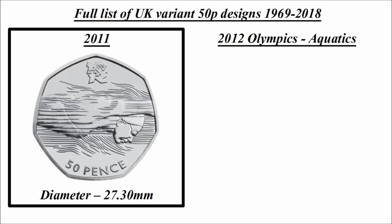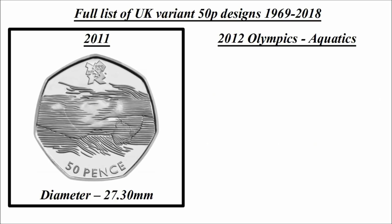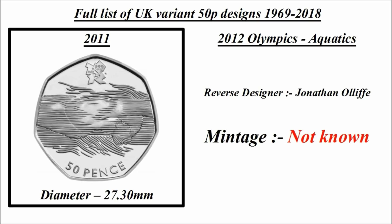2011 saw all of our Olympic coins minted, so let's check out this series. Starting with aquatics — the reverse designer is Jonathan Olive and the mintage is 2,179,000. You should also pay close attention to try to find one where you can see lines covering the swimmer's face — very rare indeed. The reverse designer is again Jonathan Olive and the mintage is not known.